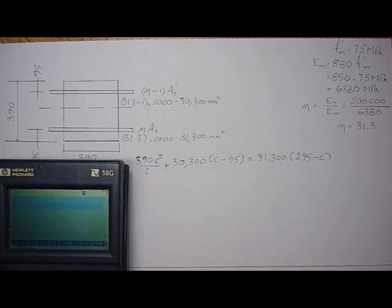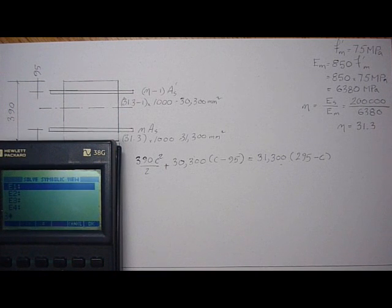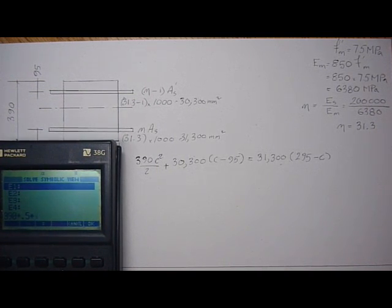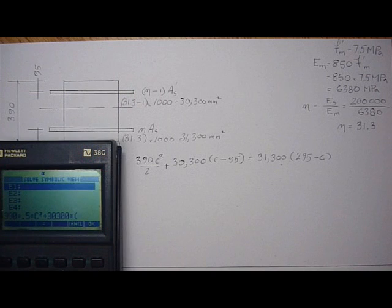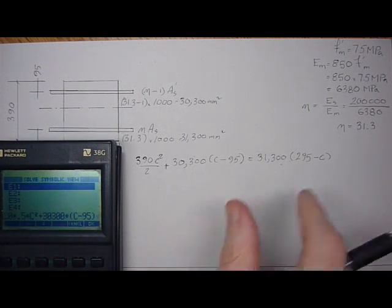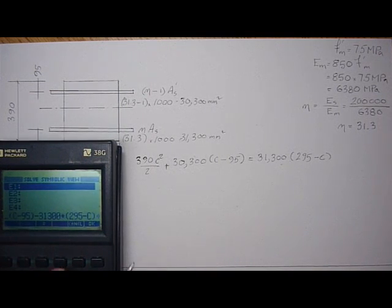So using the library solve function: 390 times 0.5 times C squared, plus 30,300 times C minus 95, then bring this over to the other side, minus, and set that whole thing equal to Y.